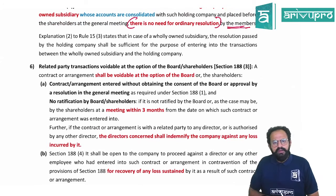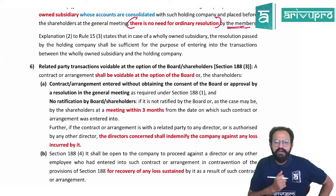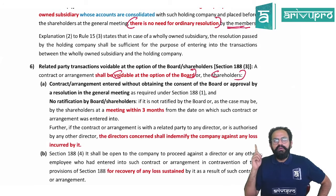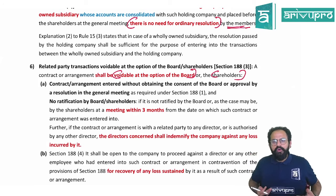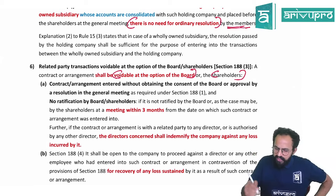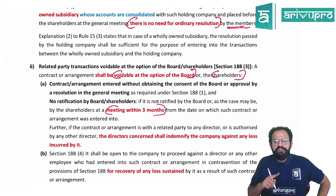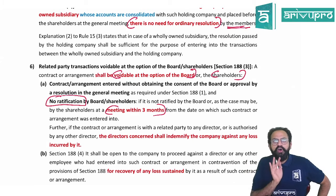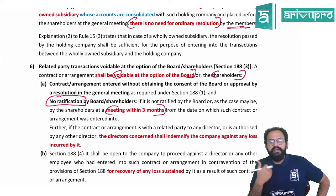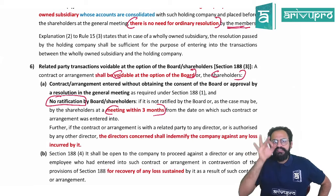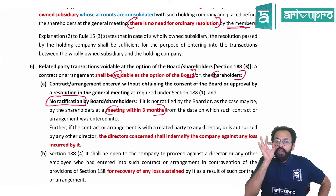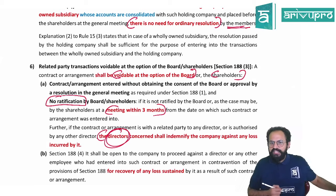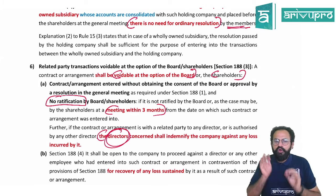If at all people have not disclosed that they are related parties, the contract is voidable at the option of the board or shareholders. The company — board or shareholders — has three months to ratify it. If not ratified within three months, the contract is voidable at the option of the company. If any loss is suffered by the company due to non-disclosure, the director who did not disclose must indemnify the company for all losses suffered.